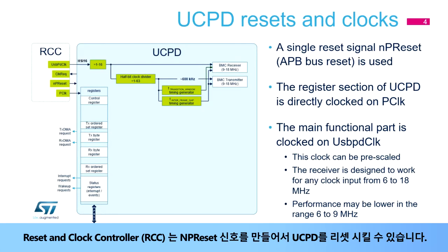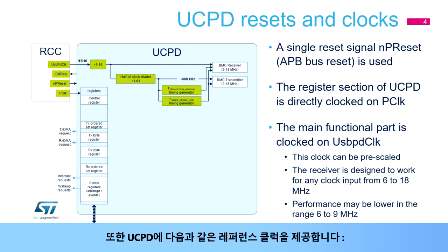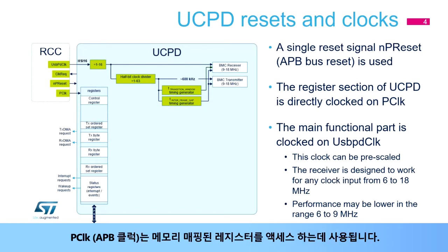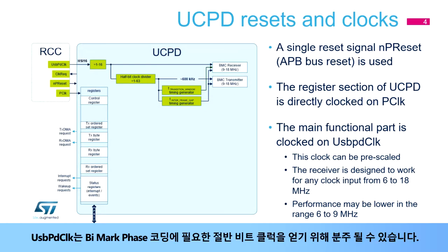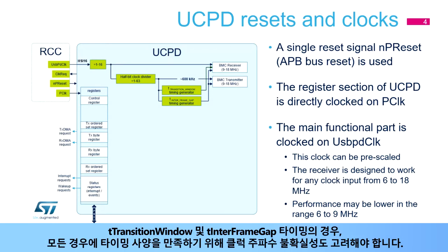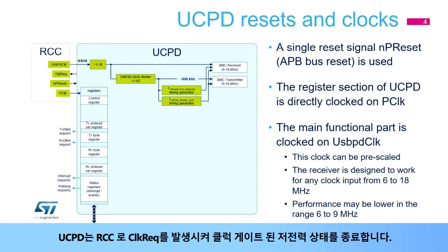The reset and clock controller unit (RCC unit) is in charge of resetting the UCPD unit by asserting the NP reset signal. It also provides reference clocks: PClock, which is the APB clock used to access memory-mapped registers, and USB PD clock, which is the main functional clock. USB PD clock can be pre-scaled to obtain the half-bit clock required by the BIPHASE MARK coding. Note that for T-Transition Window and T-Interframe Gap timings, clock frequency uncertainty should be taken into account. The UCPD module asserts a clock request to the RCC to exit a clock-gating low-power state.